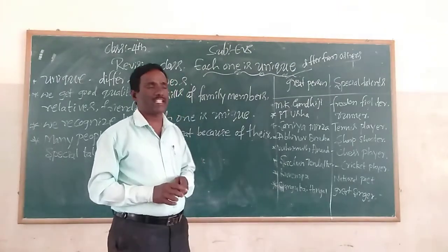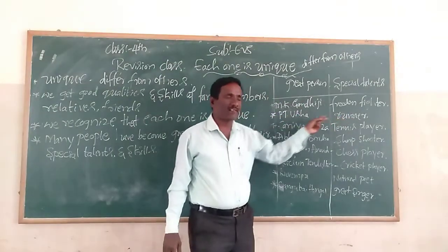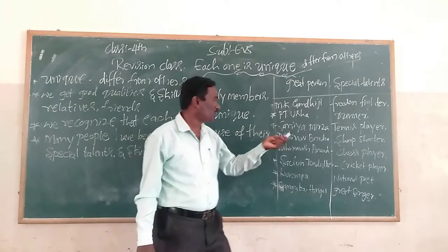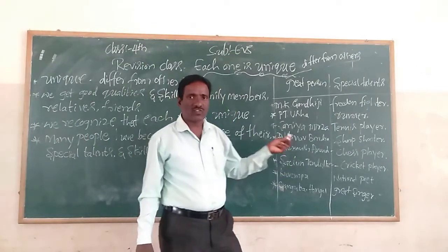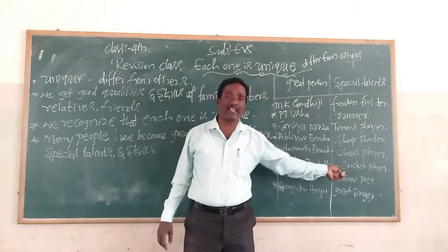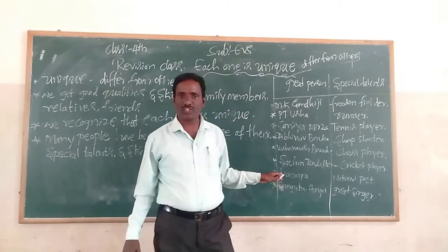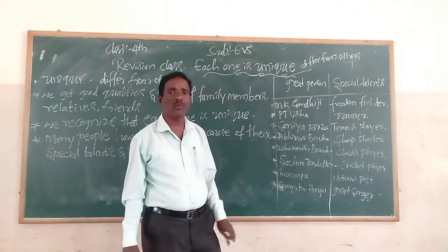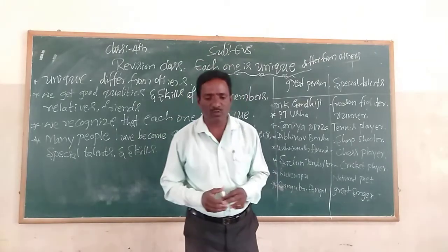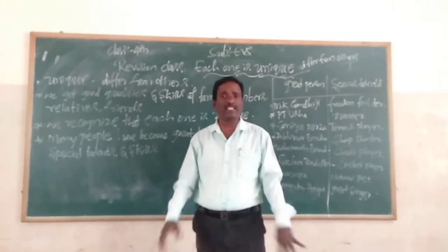Make a list of special talents of great persons in our society. For example, Mahatma Gandhi, the great freedom fighter. P.T. Usha, the great runner. Sania Mirza, tennis player. Abhinav Bindra, sharp shooter. Viswanathan Anand, the great chess player. Sachin Tendulkar, the great cricket player. Kuvempu, national poet. Gangubai, a great singer. In Karnataka, there are a number of great personalities who are famous in their field. So many people create achievements in their specific field.